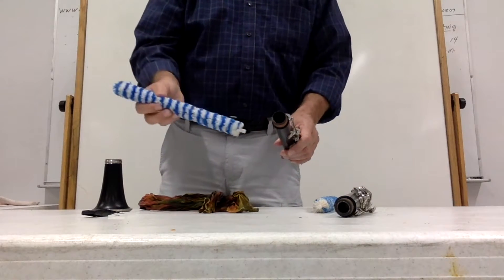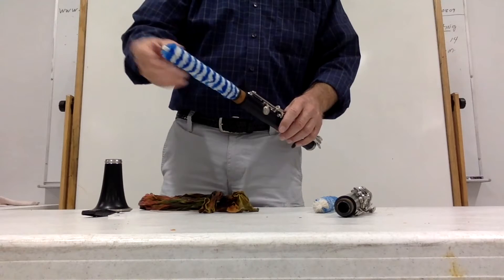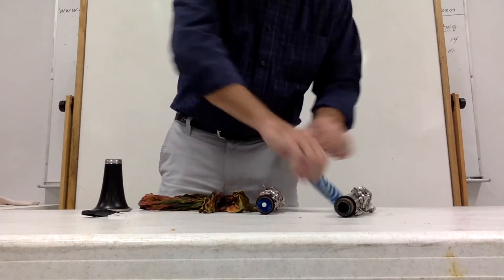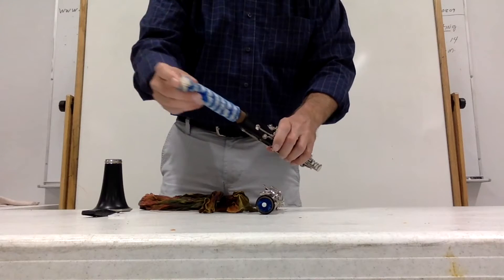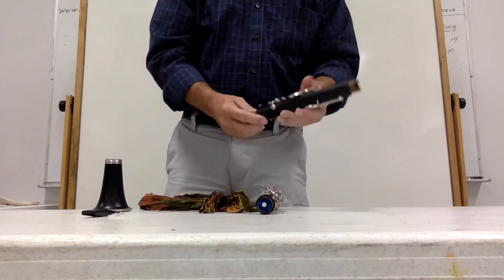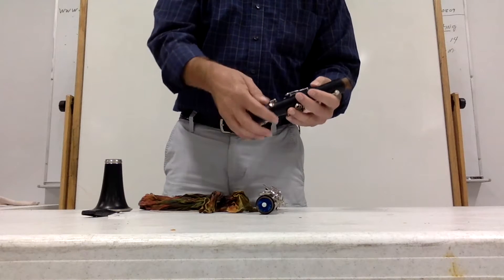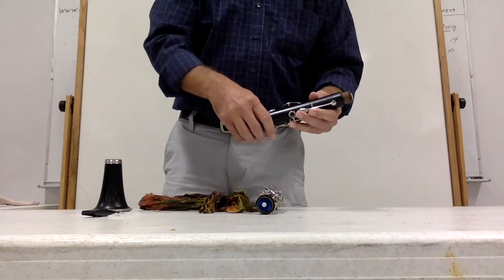And you can do this. Or you can just do this. These pad savers go inside the clarinet, like so. And you store it like that. All the wetness that's on each of the pads that's inside there will be absorbed into those pad savers.